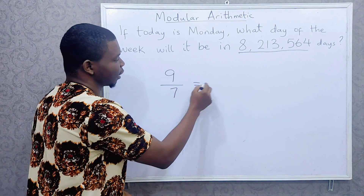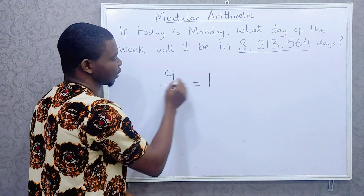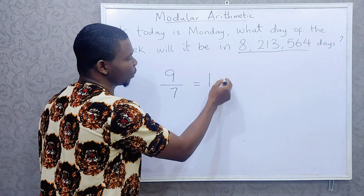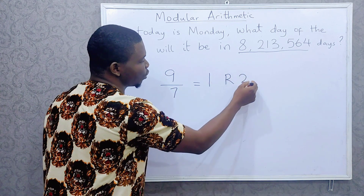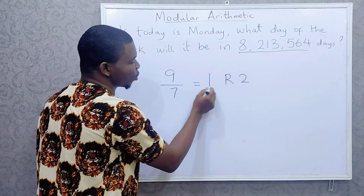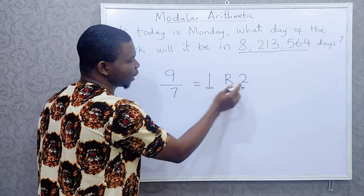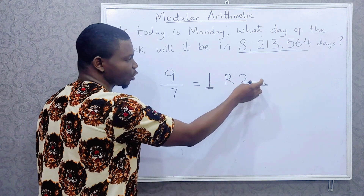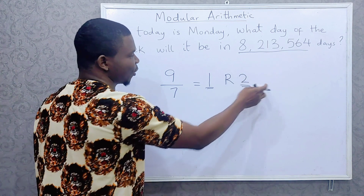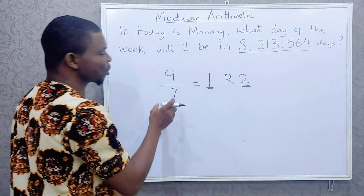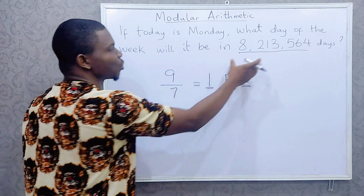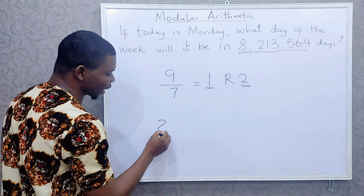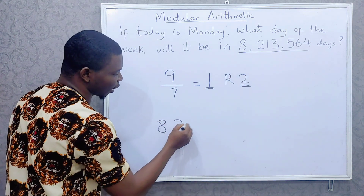So what you count is the remainder. Nine days divided by seven gives one week remainder two days. After one week it is still Monday, then you count the remainder: the eighth day is Tuesday, the ninth day is Wednesday. This same principle is what we are going to use to solve the big question.